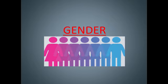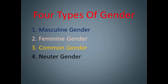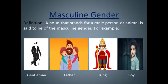So what is gender? Gender is the category of noun. There are four types of gender in English language: masculine gender, feminine gender, common gender, and neuter gender.